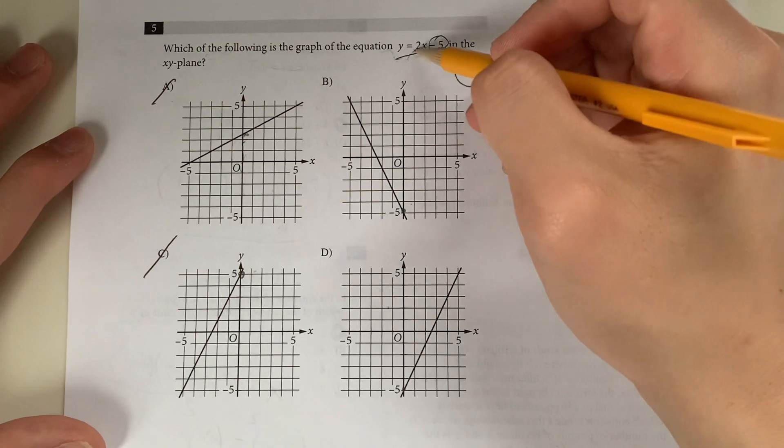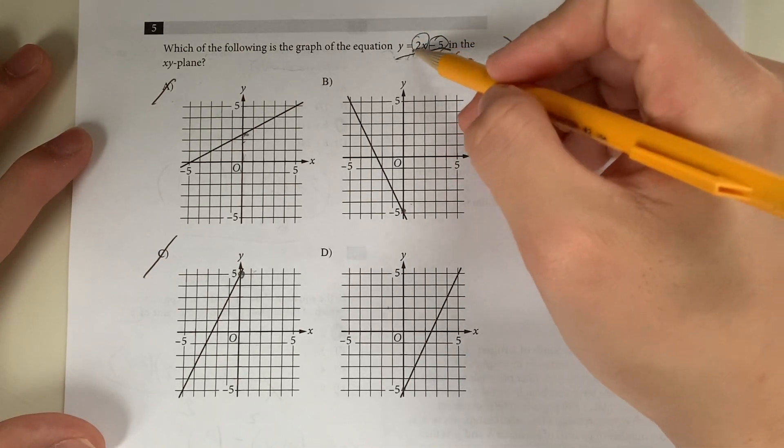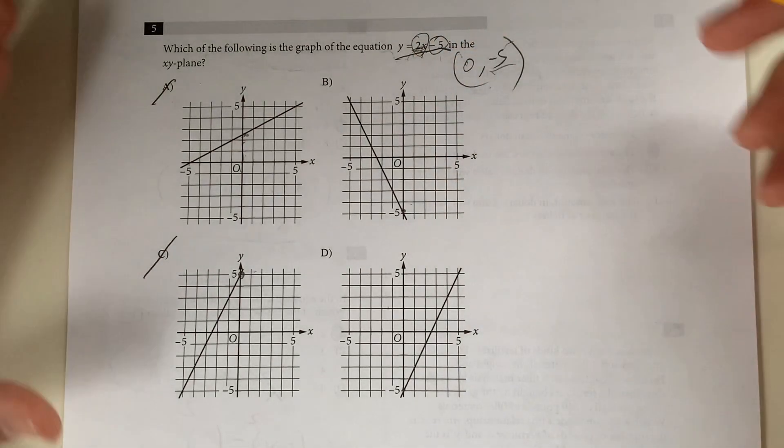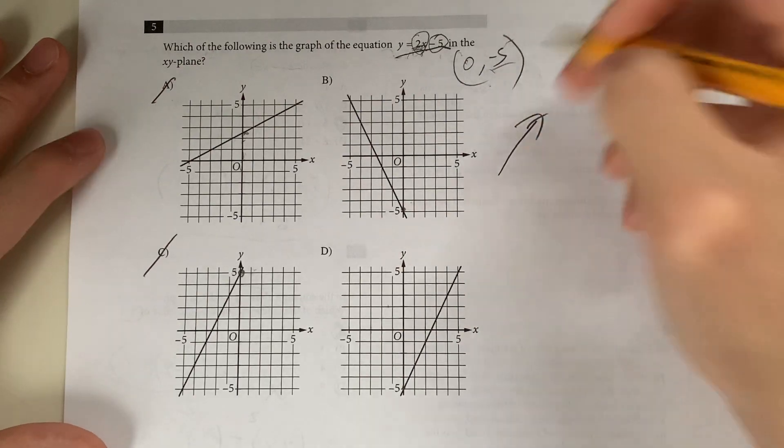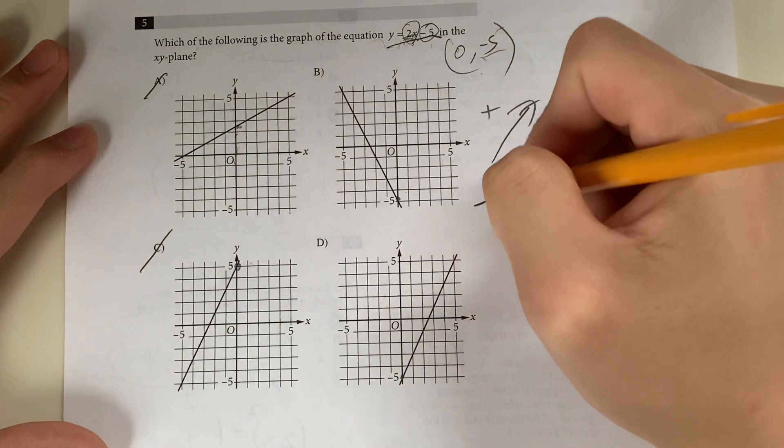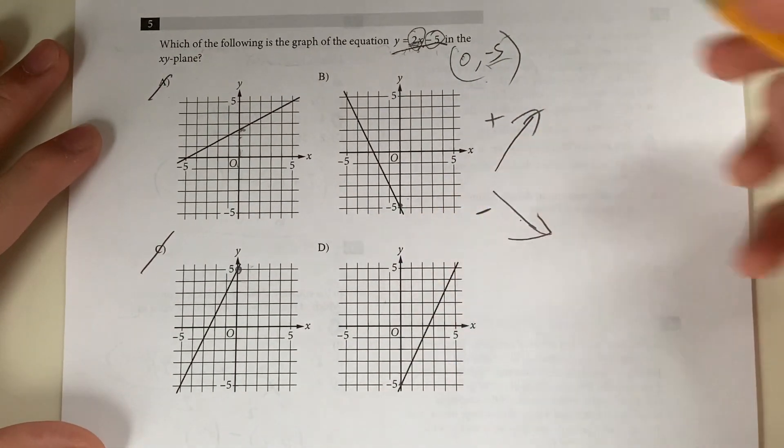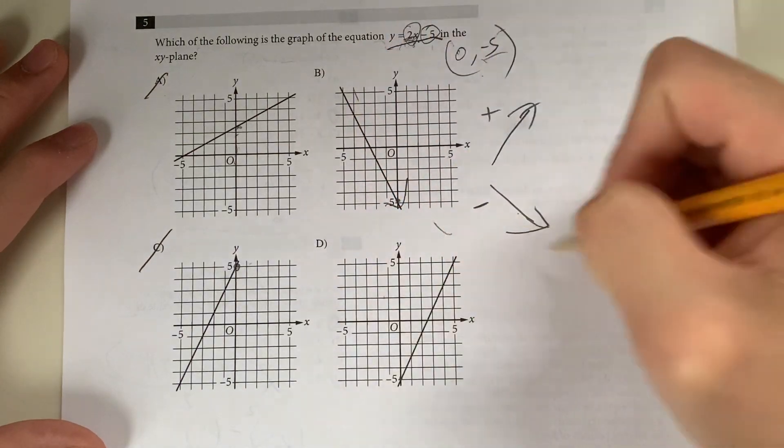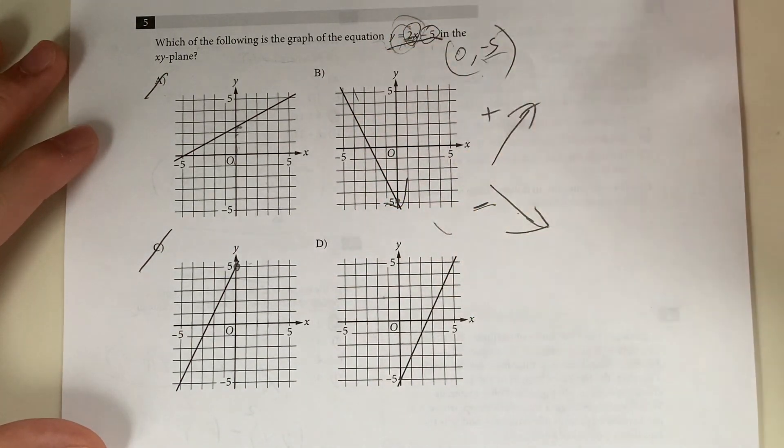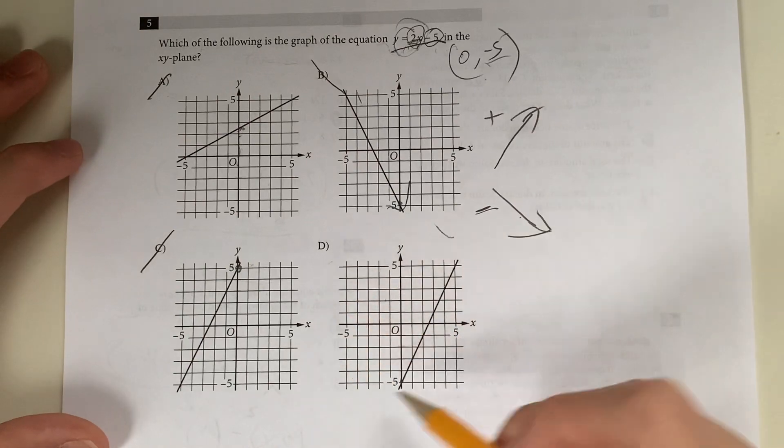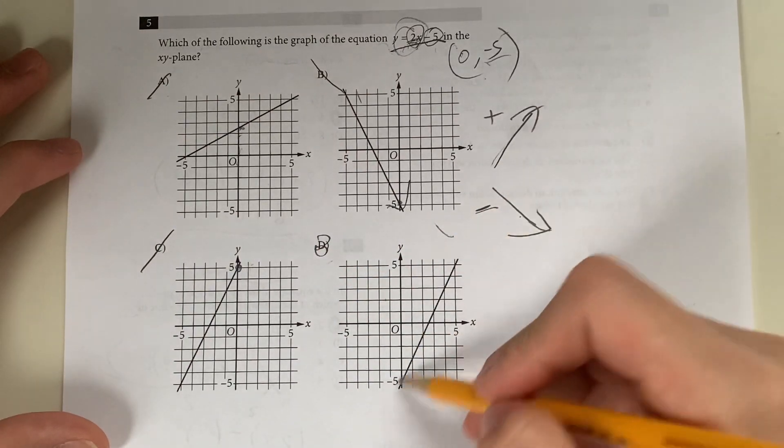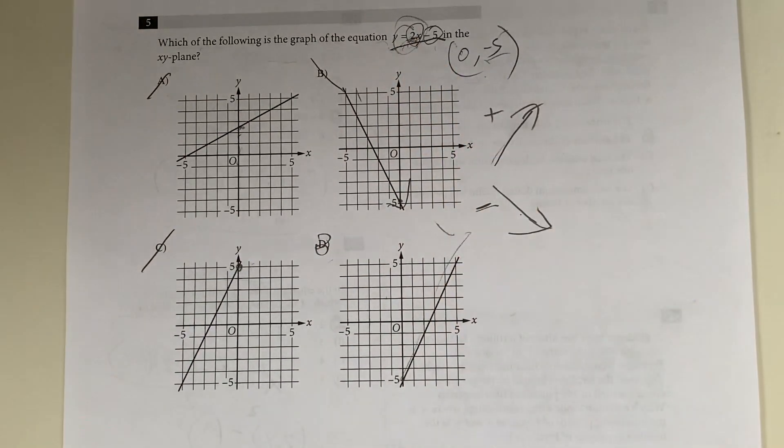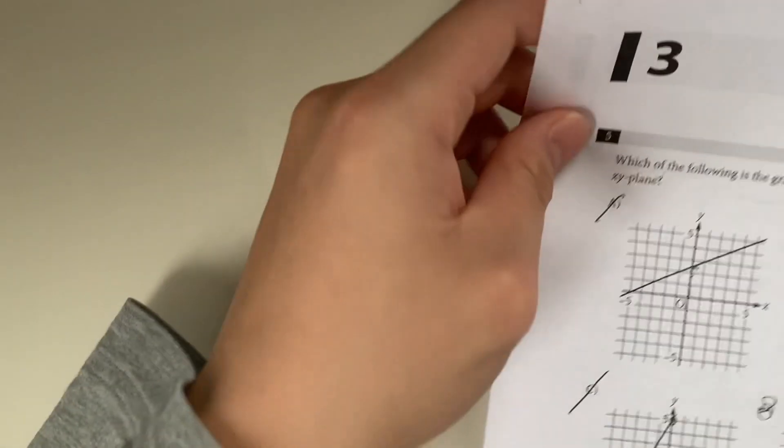Now we have to look at the slope. What's the slope? It's going to be 2x. I can tell it's a positive slope. A positive slope points in this direction. If it were negative, it goes down in this direction. Looking at your graphs, this goes down, so that's a negative slope. B's out, and D has to be your answer because it's a positive slope.